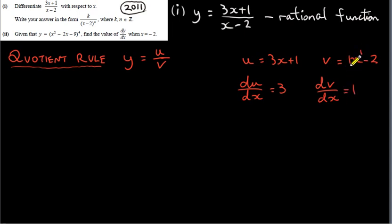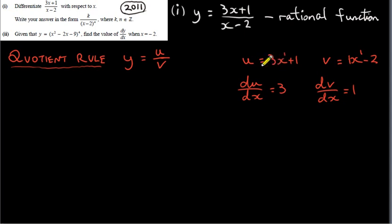If we have 1x to the power of 1, we multiply 1 by 1 to get 1, and x to the power of 1 minus 1 is x to the power of 0. Anything to the power of 0 is 1, so our answer is just the coefficient of x, which is 1. Similarly, for 3x: we get 3x to the power of 0, which is 3 times 1, giving 3. The derivative of a constant is 0.